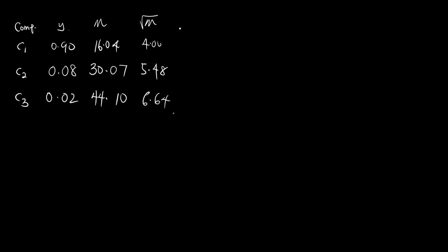Now we have the viscosity values that were given. The viscosity for methane is 0.013, for ethane is 0.012, and for propane is 0.0098.